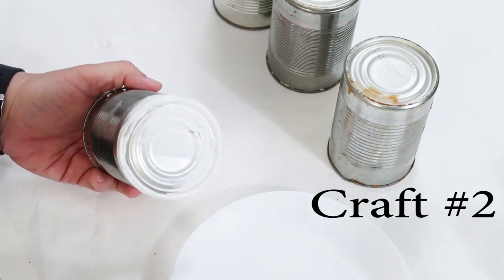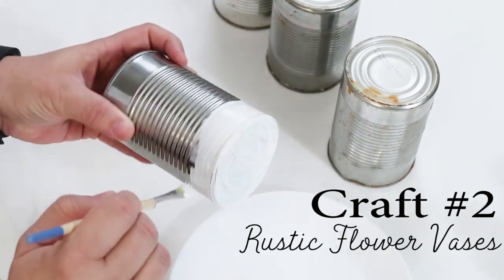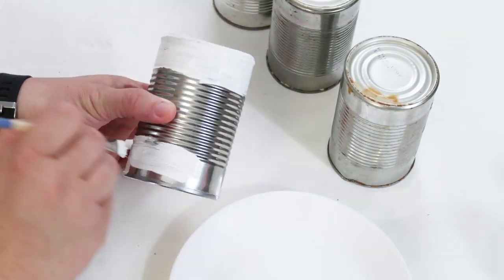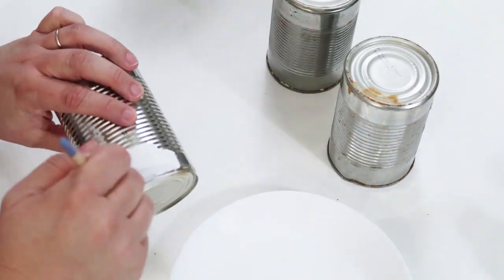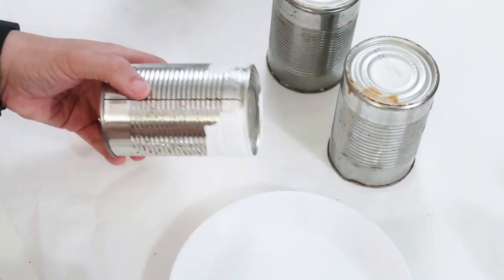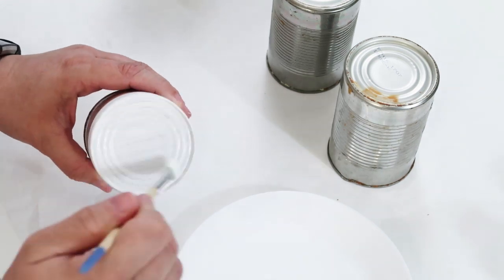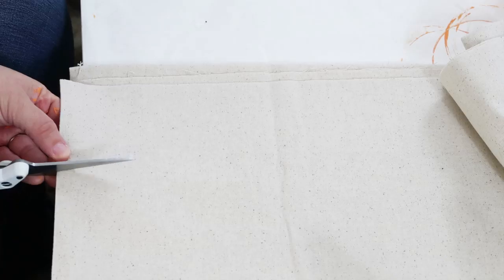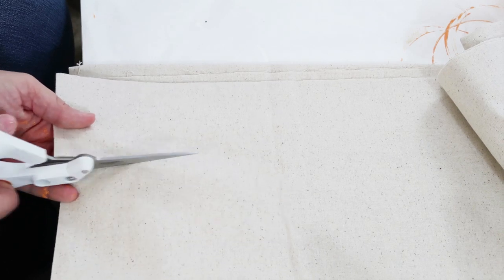The second craft today is a rustic flower vase and I'm going to make four of them, so vases. I'm taking four cans in a small size. I'm not going to paint the middle because I'm going to have fabric on that part so I'm just going to go around the tops and the bottom.